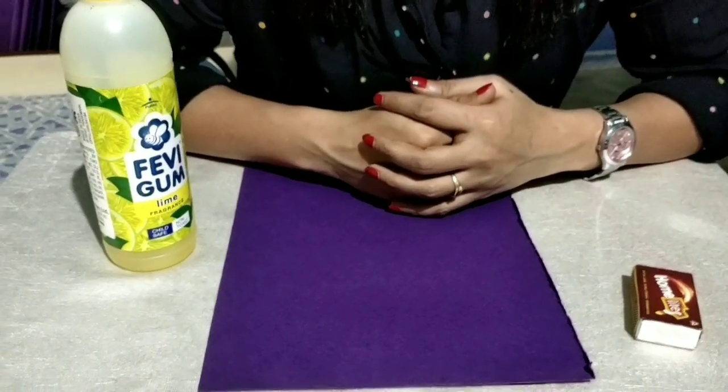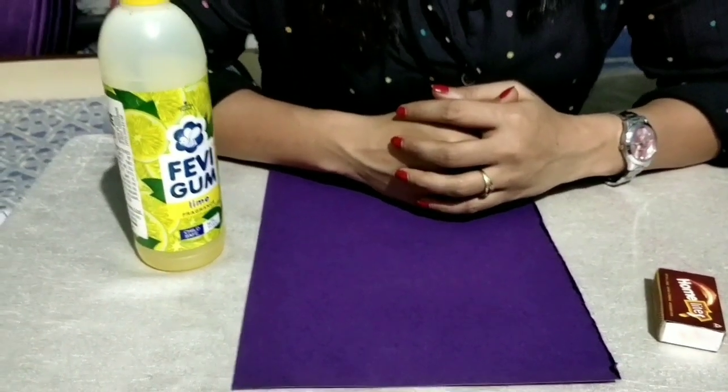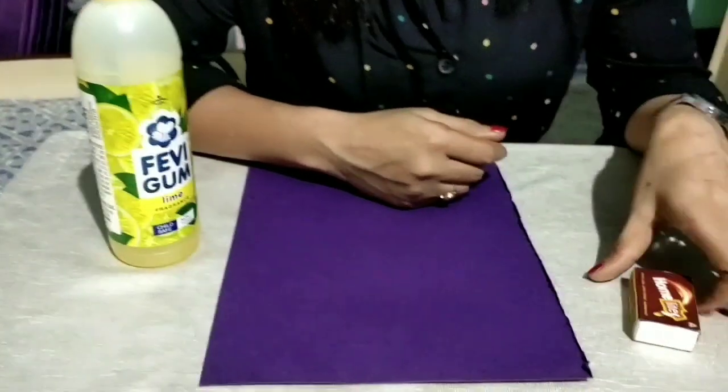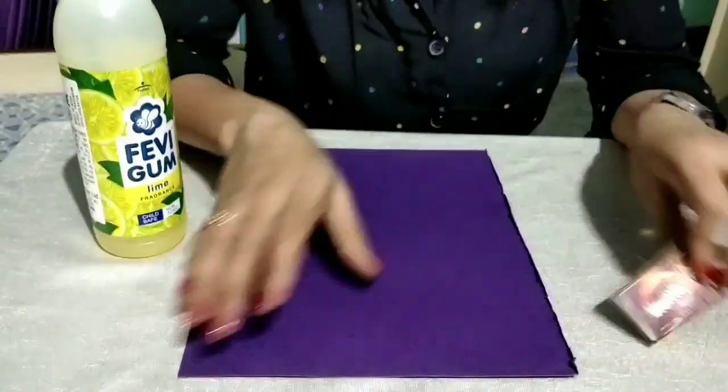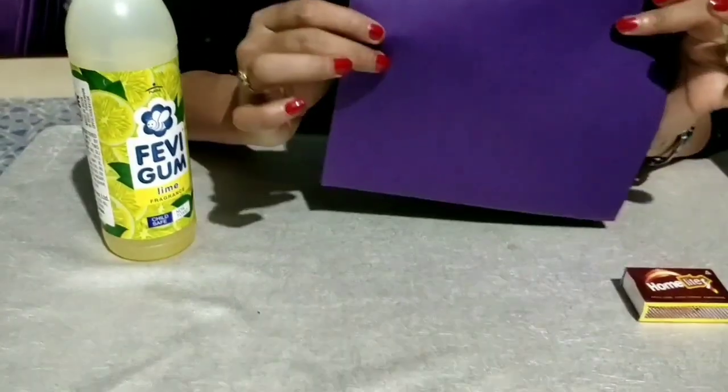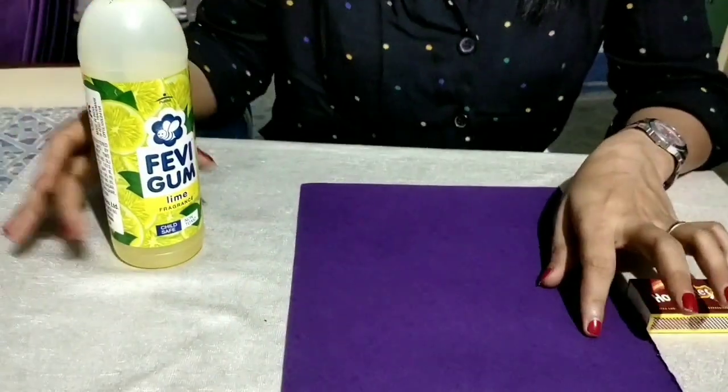Make different shapes with matchsticks. For that you need a matchstick box, an A4 size sheet, and glue.